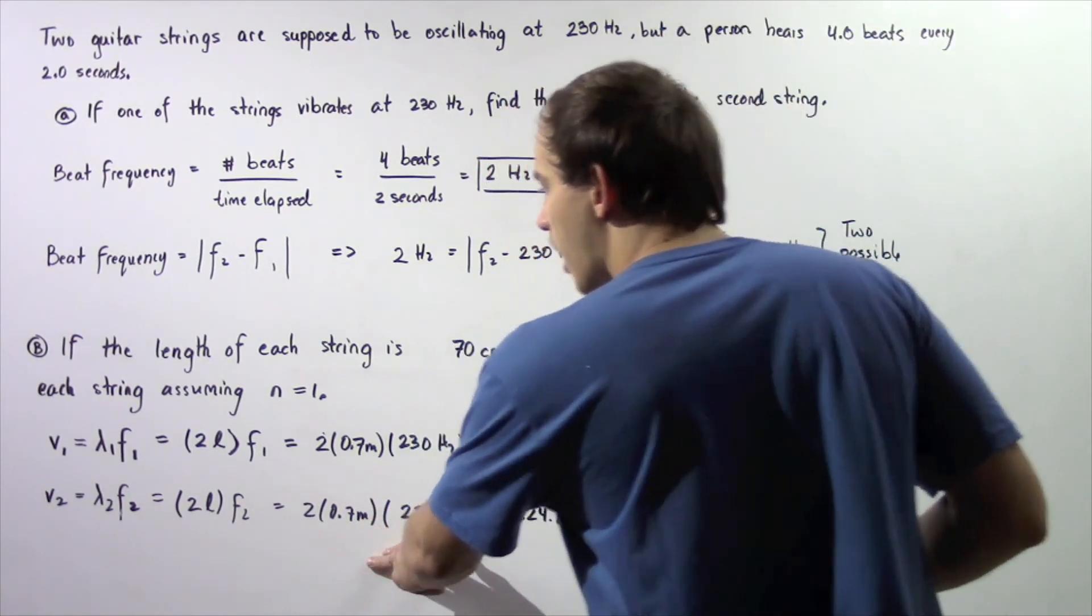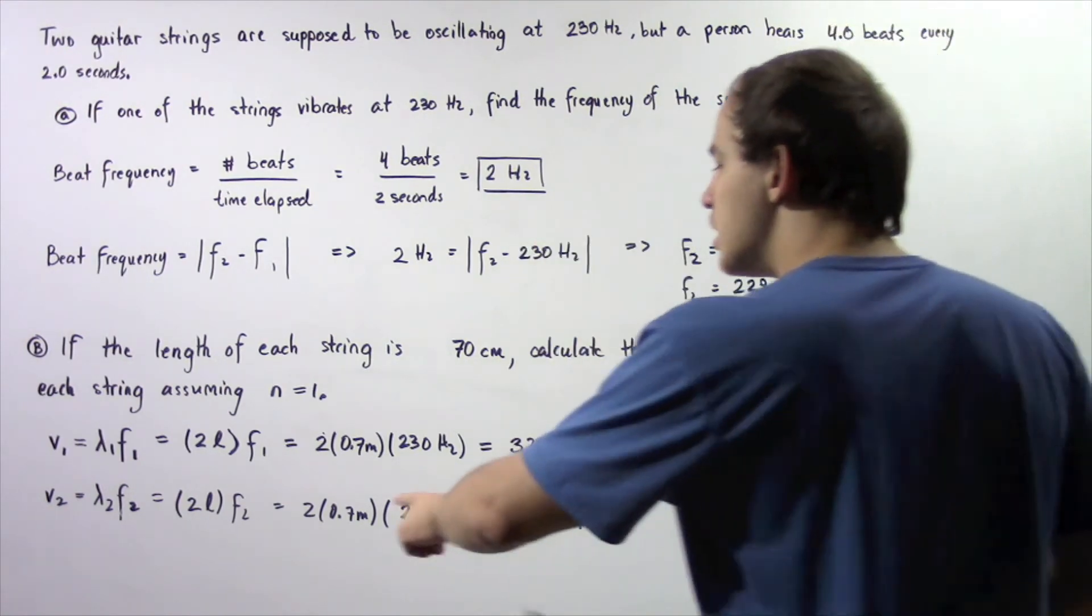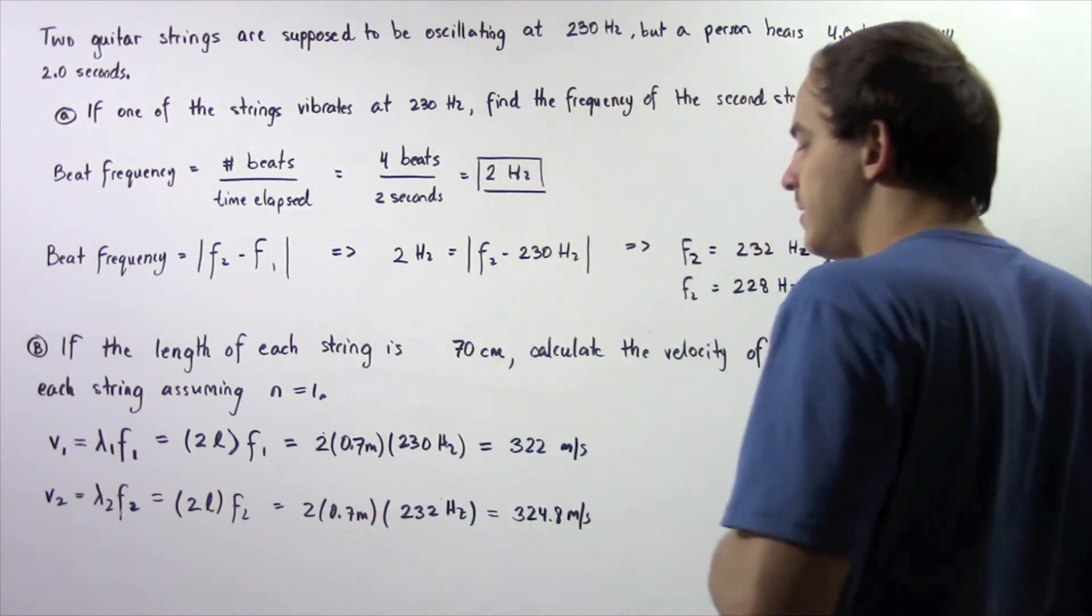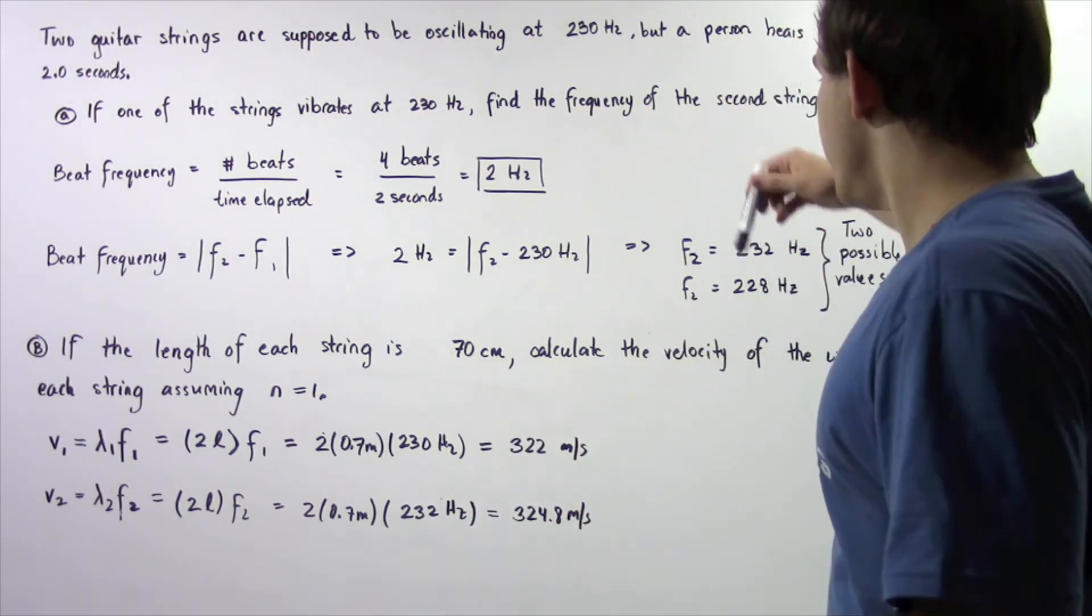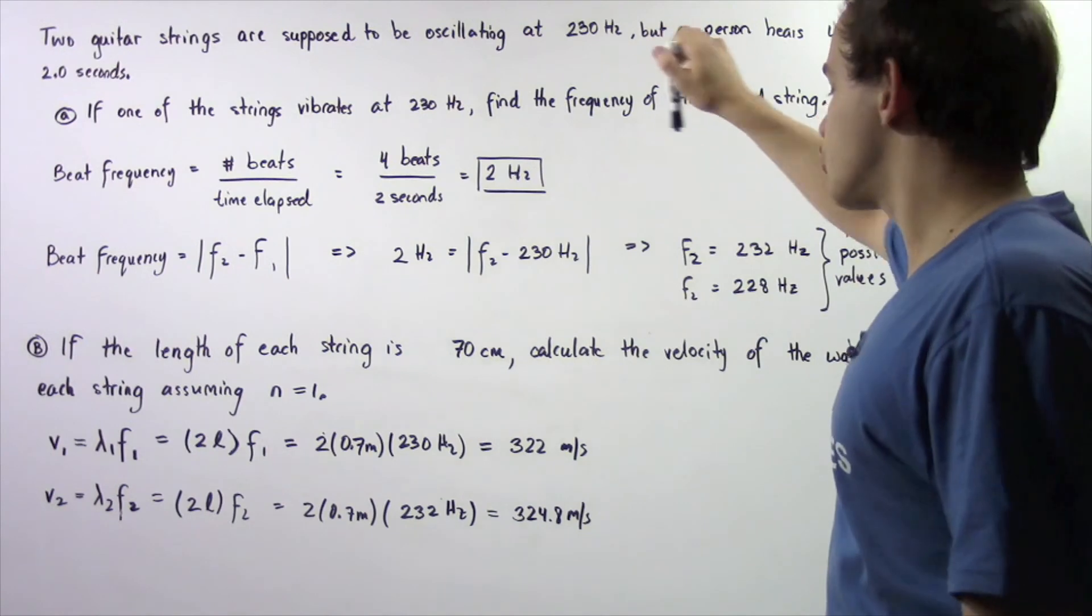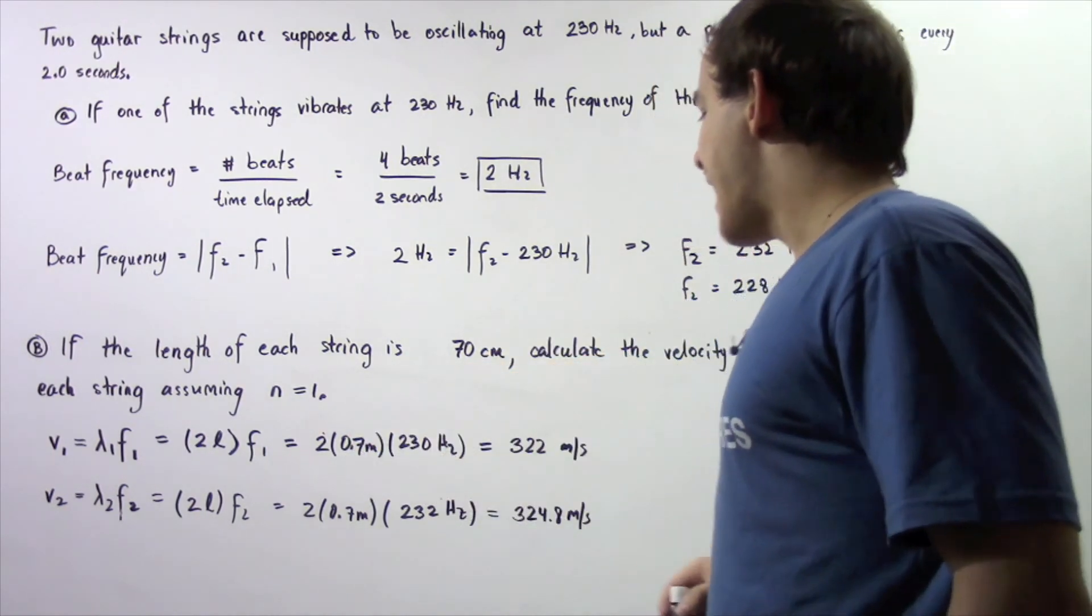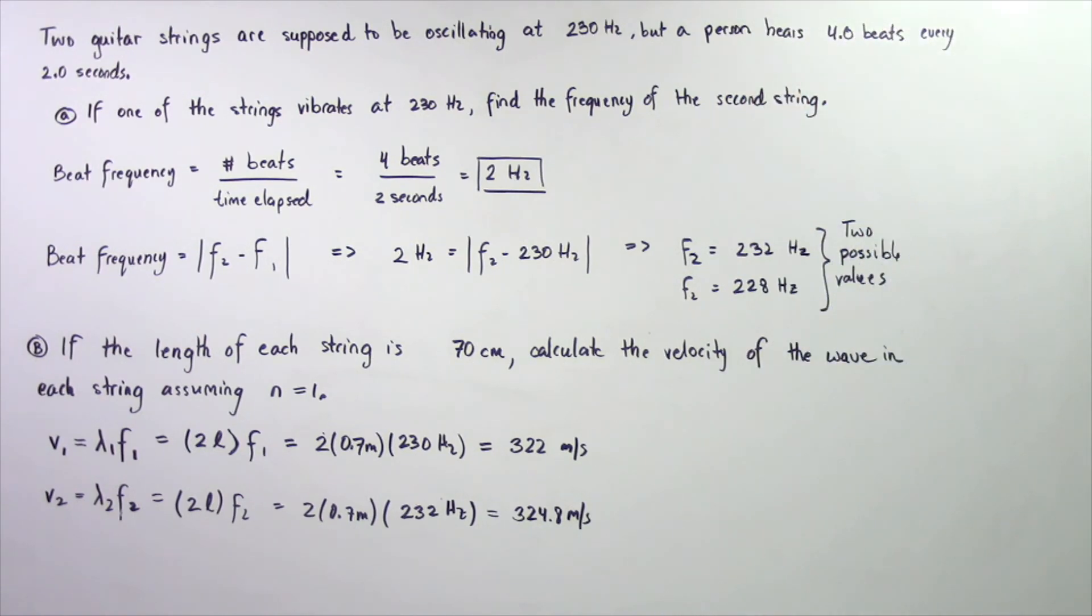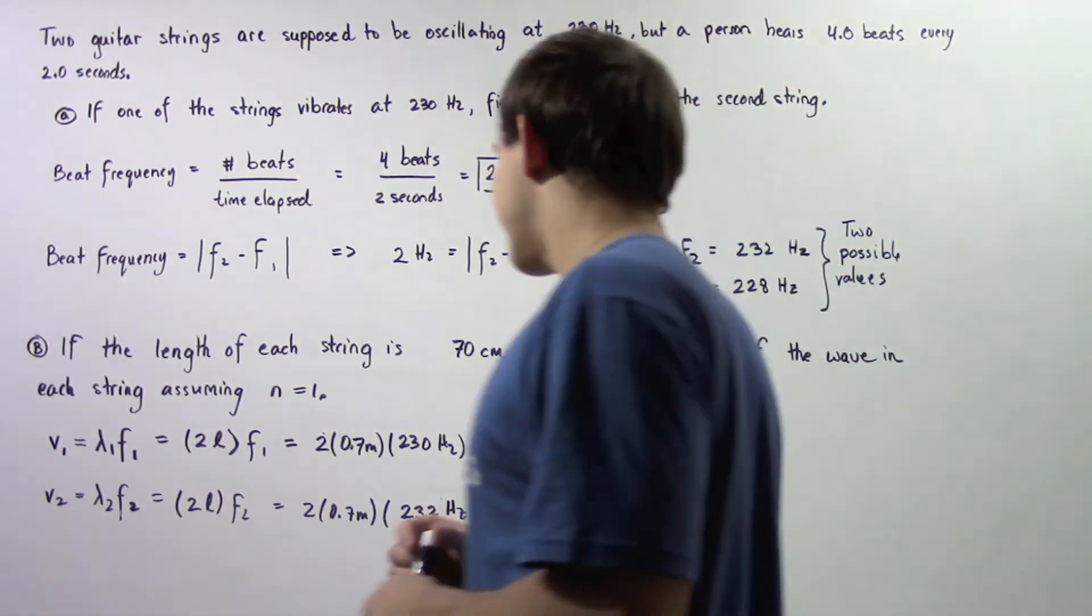The velocity of the standing wave inside string number 2 is 2 times 0.7 meters multiplied by 232 Hertz. We're assuming our frequency in string number 2 is 232 Hertz. So we multiply these out and we get a velocity of 324.8 meters per second.